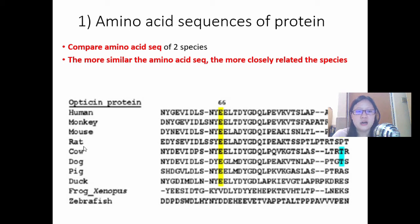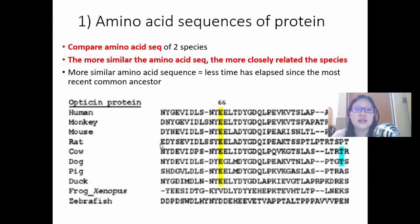You can see here that monkey, mouse, duck, rat, dog, cow, pig, all these mammals, they all share a very similar amino acid sequence. There's a few differences here and there, but very similar. And the more closely related, the more similar it is. Whereas, a frog, scientific name Xenopus, a frog has a very different amino acid sequence. Zebrafish, very different amino acid sequence from human beings. That's because they are more distantly related.